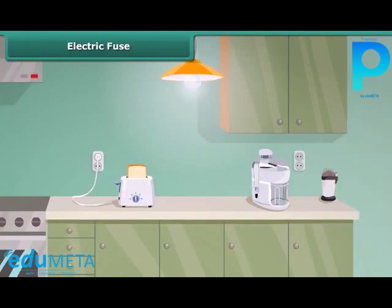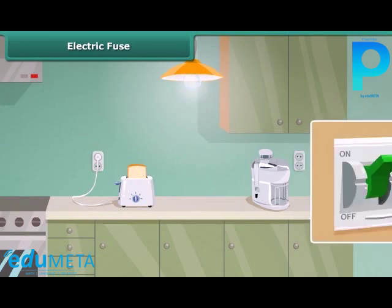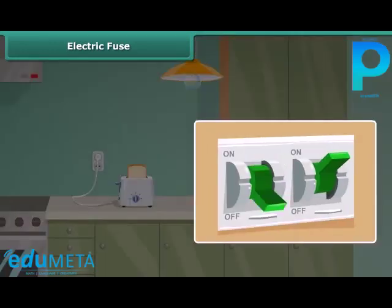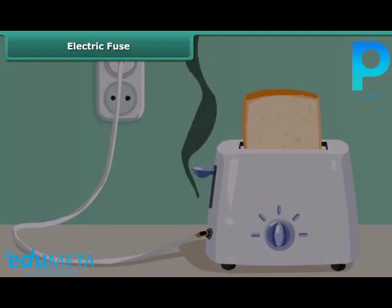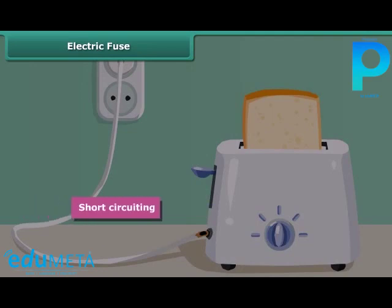Sometimes you may have seen the situation in your house where the fuse is blown off and the electric supply is cut off. This is because of the enormous amount of heat produced wherever there is an excess flow of current due to short circuiting, overloading, or insulation failures of appliances.